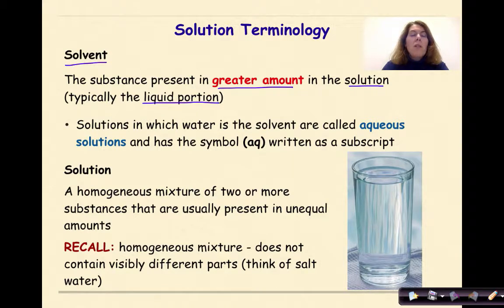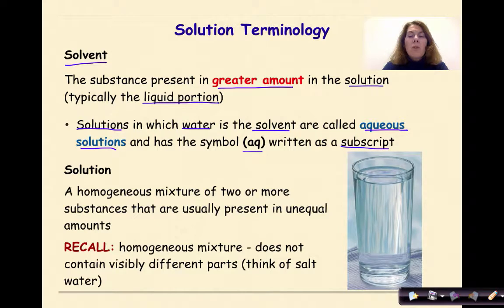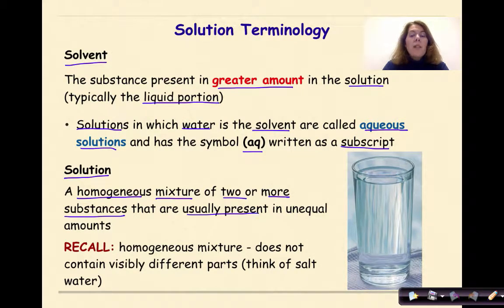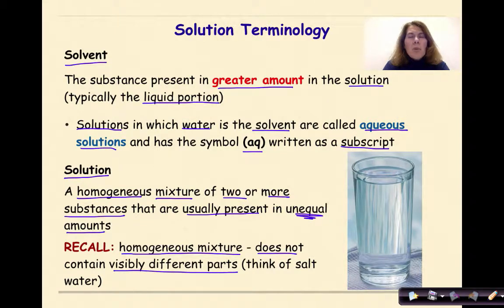The solvent is the substance present in greater amount in the solution — typically the liquid portion. Solutions in which water is the solvent are called aqueous solutions and have the symbol 'aq' written as a subscript. Putting them all together, a solution is a homogeneous mixture of two or more substances that are usually present in unequal amounts.